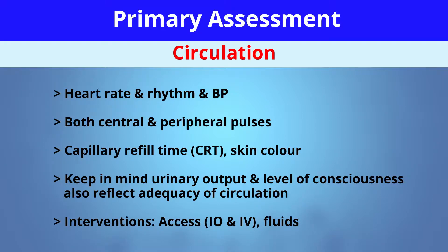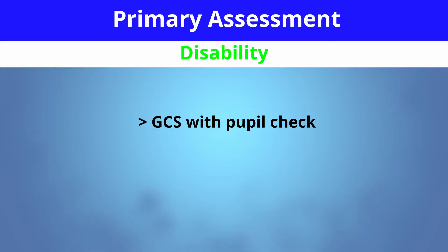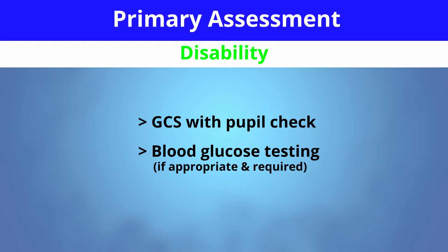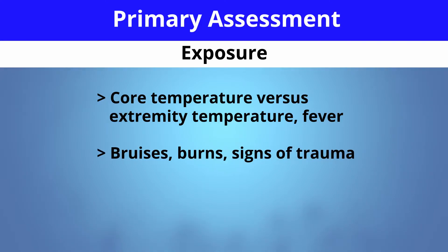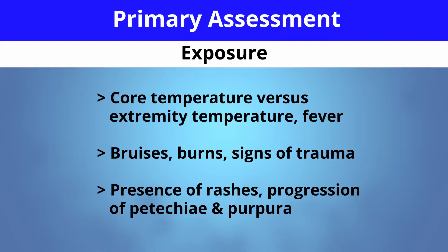Once you finish your circulation assessment, you're going to move on to D for disability, or your neurological assessment. This is where you're going to assess their Glasgow Coma Scale with a pupil check, and it's very important to remember to also do a blood glucose check at this point. Once you complete your disability assessment, you're going to move on to E, exposure. This is where you do a temperature check, looking at core temperature versus their extremity temperature — are they febrile? You're also going to do a head-to-toe assessment, looking for signs of trauma, any bruises or burns, presence of rashes, or any progression of petechiae or purpura.